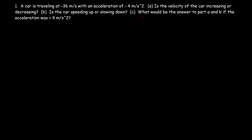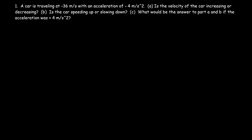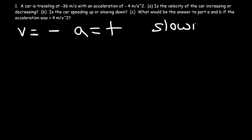Let's read part C. What would be the answer to part A and B if the acceleration was positive 4 meters per second squared instead of negative 4? The velocity is still negative 36 — still negative — but the acceleration is now positive. So the car should be slowing down, because the sign of velocity and acceleration are different.